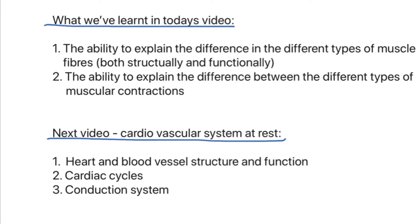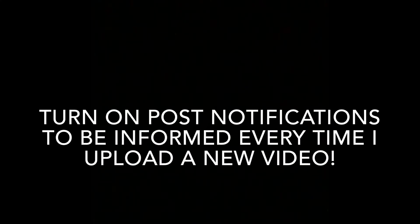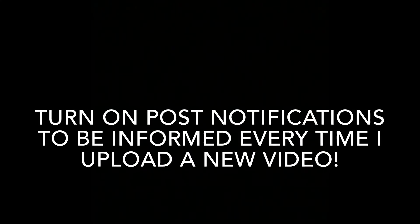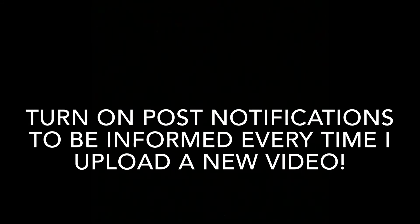What have we learned in today's video? Firstly, the ability to explain the difference in the different types of muscle fibres, both structurally and functionally. Secondly, we have also learned the ability to explain the difference between the different types of muscular contractions. Moving on to the next video, we're going to look at the cardiovascular system at rest - firstly the heart and blood vessel structure, secondly cardiac cycles, and thirdly the conduction system. Thank you everyone for watching, please subscribe if you haven't already and share this video with your friends.